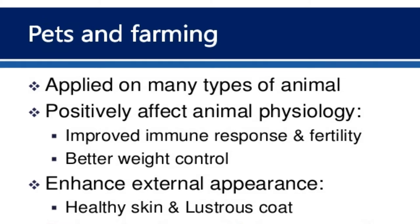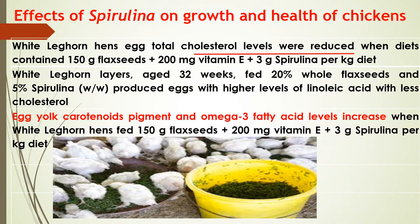Algal biomass is used in many types of animal feed and positively affects animal physiology, including improved immune response and fertility, better weight control, and enhanced external appearance such as healthy skin and lustrous coat.